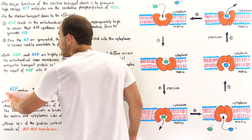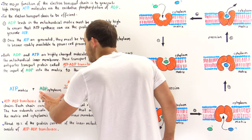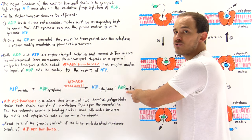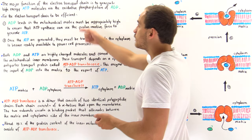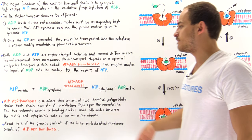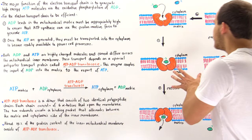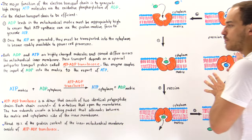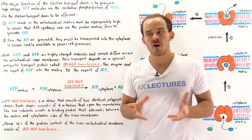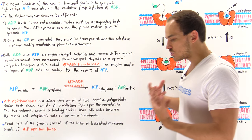At the same time that ATP moves out of the matrix into the cytoplasm, ADP is brought from the cytoplasm into the matrix so that oxidative phosphorylation of the ADP can take place along the electron transport chain found on the inner membrane of the mitochondria. Now, before we look at the mechanism, let's discuss the structure of ATP-ADP translocase.